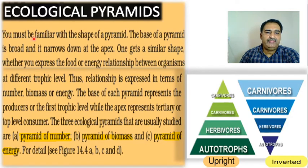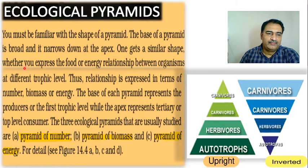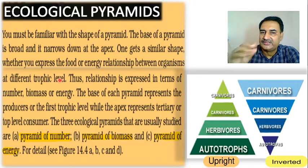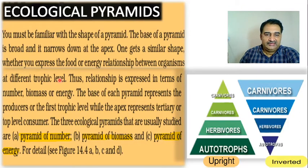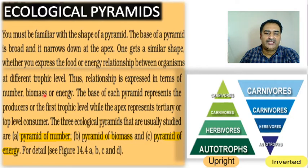You must be familiar with the shape of a pyramid — the base of the pyramid is broad and it narrows down at its apex. One gets a similar shape whether you express the food or energy relationship between organisms at different trophic levels. This relationship is expressed in terms of number, biomass, or energy. So it is clear that ecological pyramids are of three types.